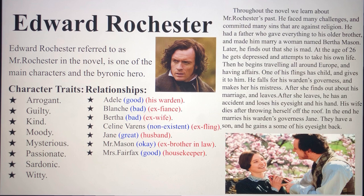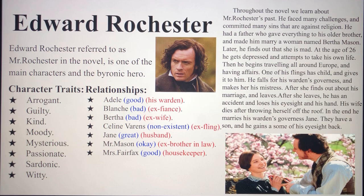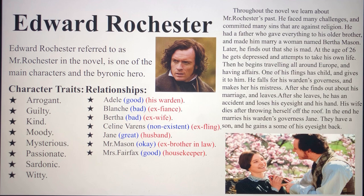Edward Rochester, referred to as Mr. Rochester, is one of the main characters and the Byronic hero — the love interest of the protagonist. His character traits: he is arrogant and guilty because he committed many sins. He is kind — Jane constantly said he has this great kindness about him. He was very moody and mysterious — sometimes warm towards Jane, sometimes cold. He was passionate, with a deep love for Jane, sardonic, and very witty.